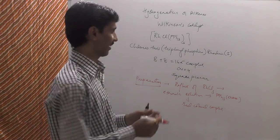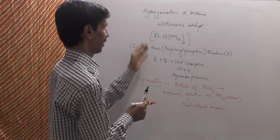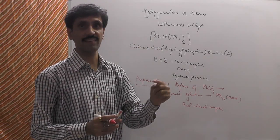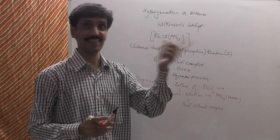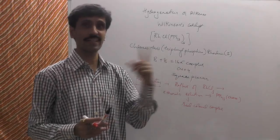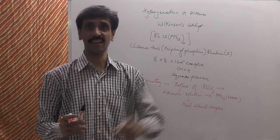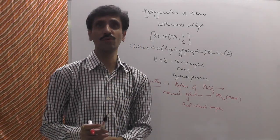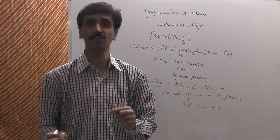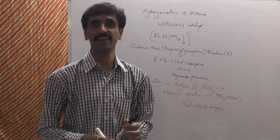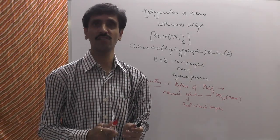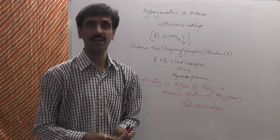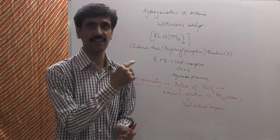This transition metal complex behaves as a catalyst. The name of this is Wilkinson's catalyst, and it was the very first catalyst used in carrying out the important reaction of hydrogenation of an alkene to give alkane. With that introduction in place, we can now discuss the mechanism using Wilkinson's catalyst.